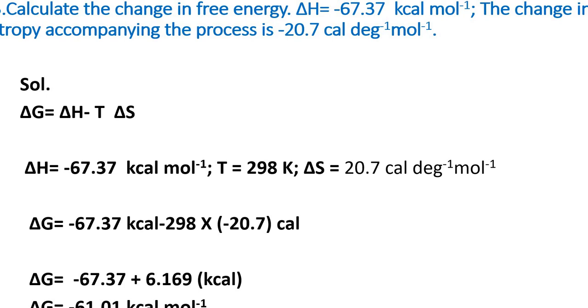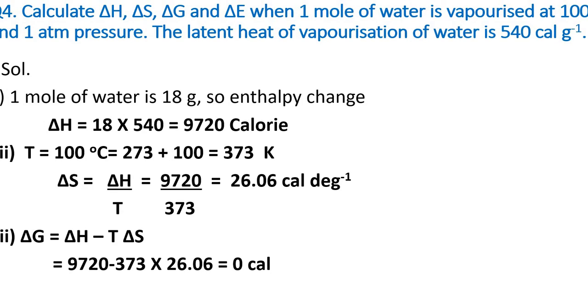Another numerical: calculate ΔH, ΔS, ΔG, and ΔE when 1 mole of water is vaporized at 100°C and 1 atm pressure. The latent heat of vaporization of water is 540 cal g⁻¹.